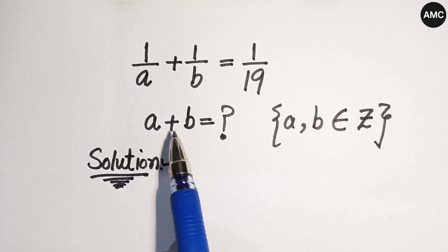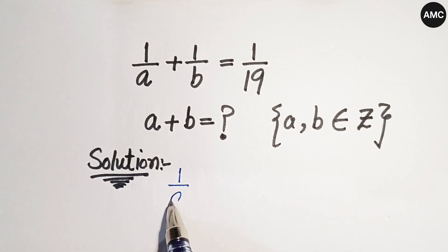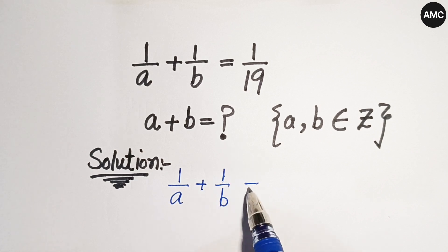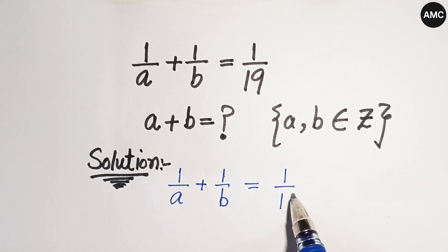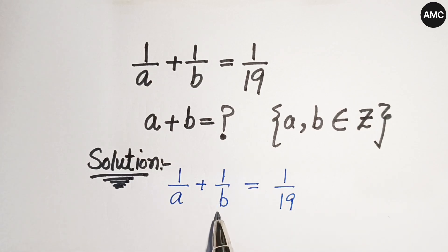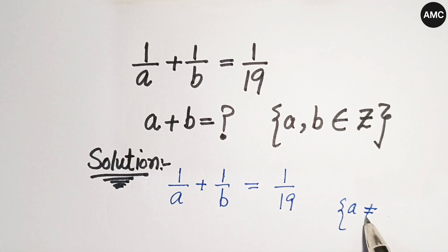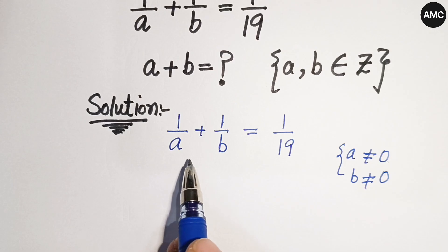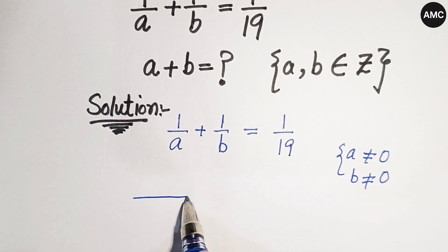Starting our solution: 1 over a plus 1 over b is equal to 1 over 19. Since a and b are in the denominator, a cannot be equal to 0 and b cannot be equal to 0. Our first step is to take the least common multiple on the left hand side, which gives us a times b, so we have (b plus a) over (a times b) equal to 1 over 19.